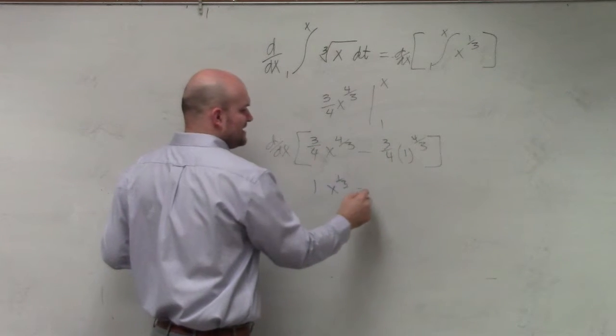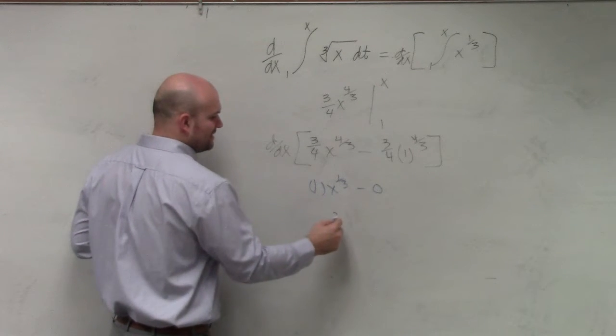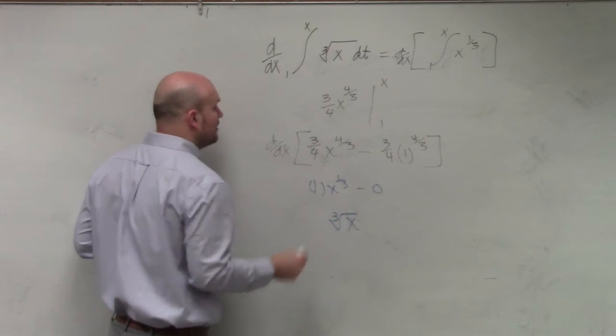And then differentiate this. That's a constant, so that's going to be 0. And therefore, I can rewrite this as the cube root of x.